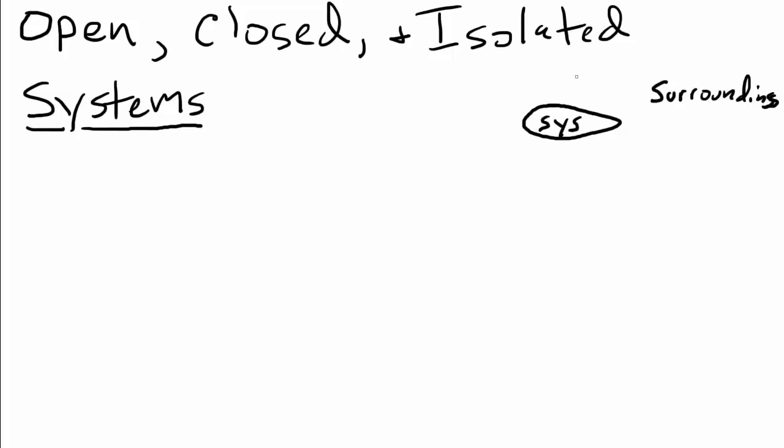When we want to differentiate these three different types of systems - open, closed, and isolated - it's really simple. This is going to be a pretty short lecture. Here's what it boils down to: we have to consider two things, matter and energy.